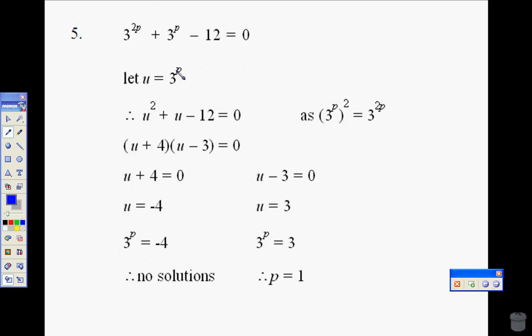So again, we've got a question like this. Here's our indice laws. 3 to the power of 2p can be written as 3 to the power of p all squared, because these two just multiply to give us 3 to the power of 2p. You've got to remember your indice laws. So if u is equal to 3 to the power of p, 3 to the power of 2p is equal to u squared.